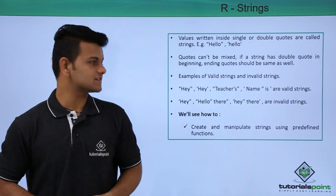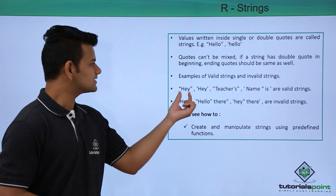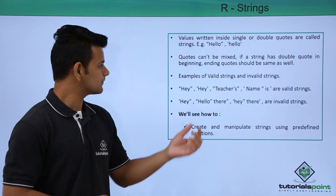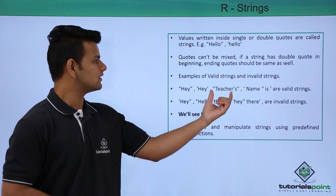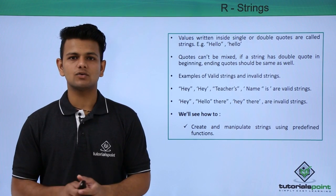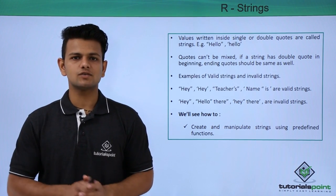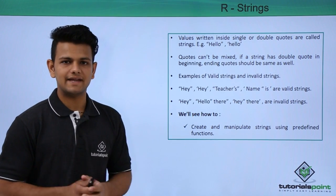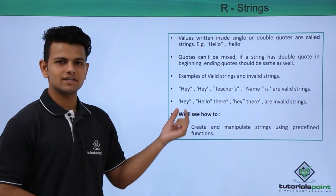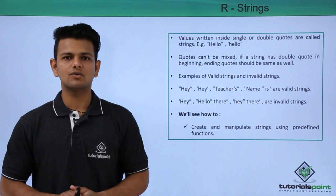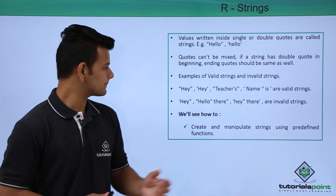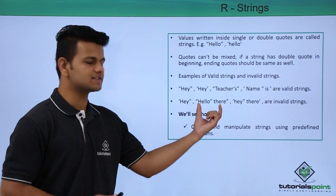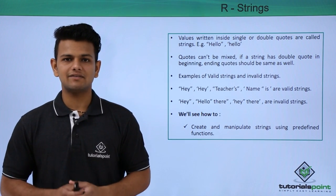Examples of valid and invalid strings are: this is a valid string because the starting and ending quotes are the same. This is also a valid string. This string has a single quote inside the double quotes, so this is also valid. Below is an example of an invalid string — this is starting with a single quote but ending with a double quote, so this is an invalid string. Similarly, there is a double quote inside these double quotes, so this is also an invalid string.